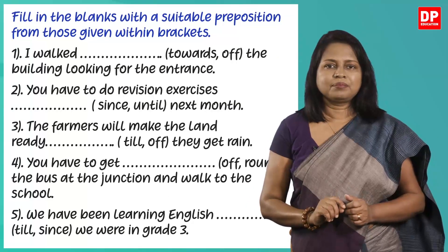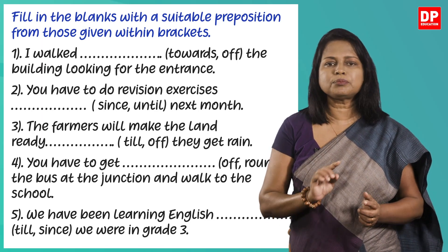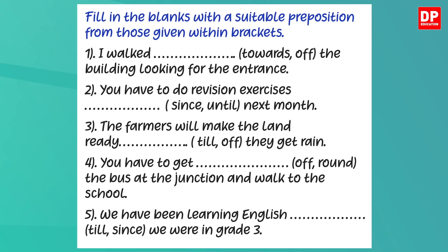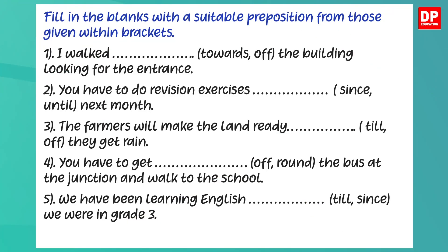First we'll do activity 11 on page 100 of your textbook. You have to fill in the blanks with a suitable preposition from those given within brackets. Pause the video and do it now. Let's see how you have done it. Read the first sentence: 'I walked [towards / off] the building looking for the entrance.' 'Towards' means movement in the direction of something and 'off' means movement away and often down from something. To look for the entrance of the building you can't walk away from it — you have to walk towards it. So the answer is 'towards': 'I walked towards the building looking for the entrance.'